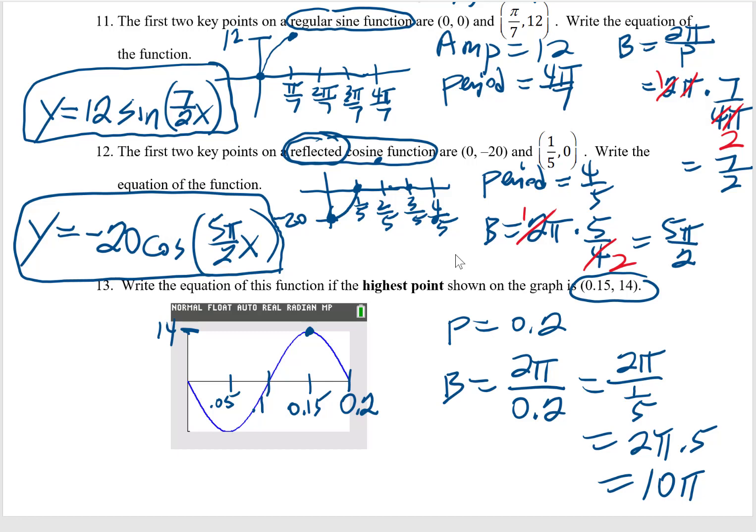I can see that the amplitude is 14. Because of the reflection, the A value will be negative 14. And so here's my equation. Y equals negative 14, reflected sine, amplitude of 14, sine of 10 pi x. And that's the answer.